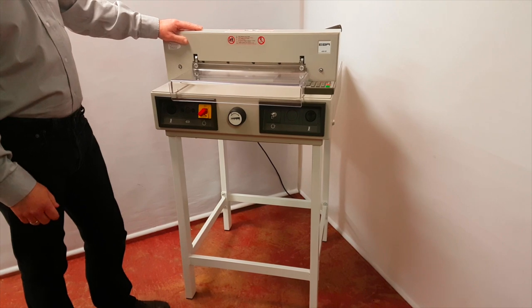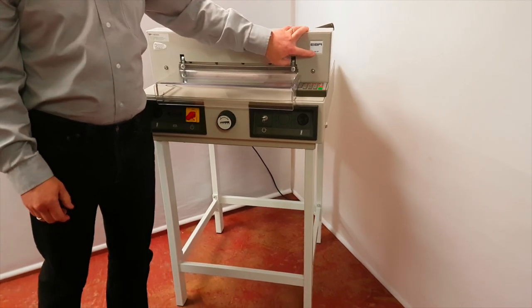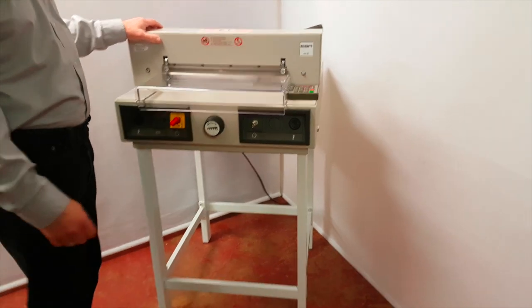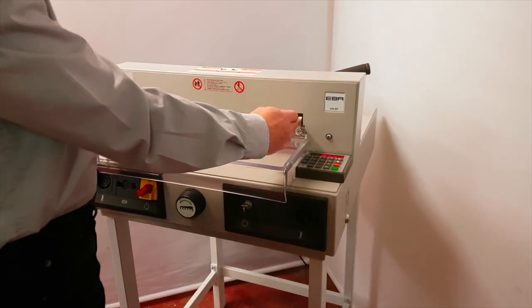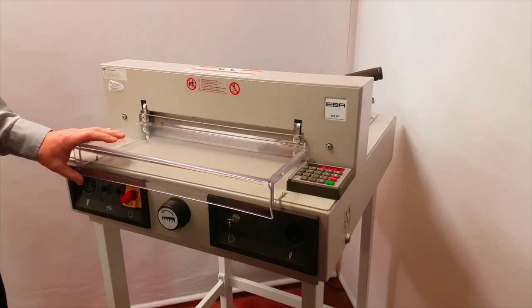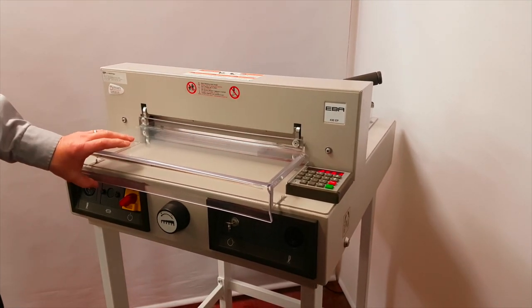Here we have a used pre-owned EBA 430 EP electric guillotine. As the name suggests it will cut 430mm wide, so that means it will cut A3 paper on all sides or smaller.